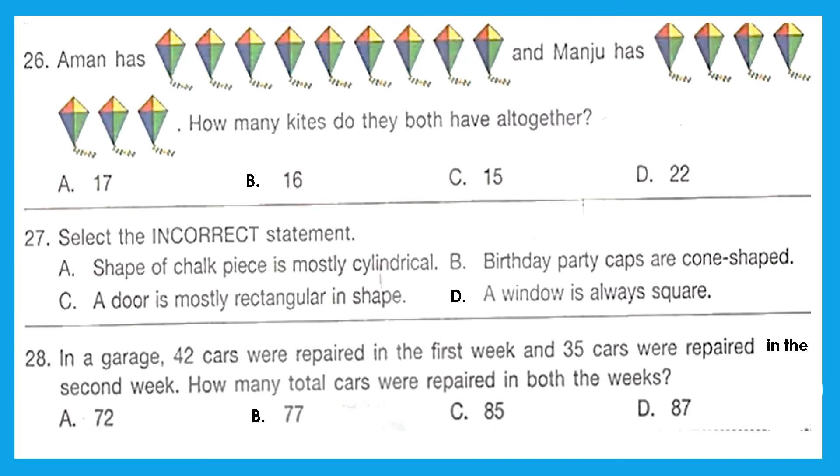Question 26: Aman has 1, 2, 3, 4, 5, 6, 7, 8, 9 kites, and Manju has 1, 2, 3, 4, 5, 6, 7 kites. How many kites do they have together? All together we have to add it: 9 plus 7 equals 16. Option B, 16 is the right answer. Question 27: Select the incorrect statement. A: Shape of chalk piece is mostly cylindrical—correct, go and observe it. B: Birthday party caps are cone-shaped—that is also right. C: A door is mostly rectangular in shape—this is also correct. D: A window is always square—now this is an incorrect statement because it can be rectangular also, it can be square also. It's not mandatory that it will be always square.